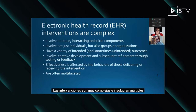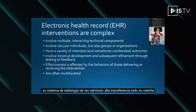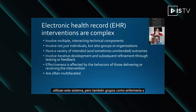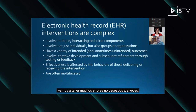Electronic health record interventions are very complex. They involve multiple interacting technical components — your lab system, your pharmacy system, your radiology system, maybe admission, discharge, transfer — all going into a patient database. It doesn't involve just individuals using this system but also groups like nursing, radiology, and respiratory therapy. These groups within the organization can be very powerful and can either make or break your project.